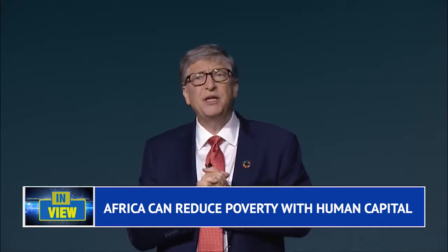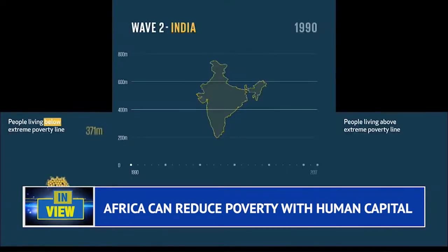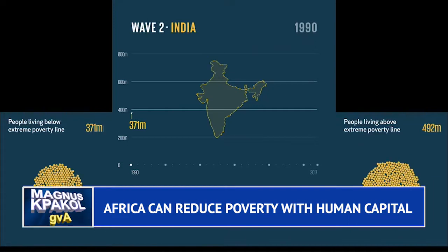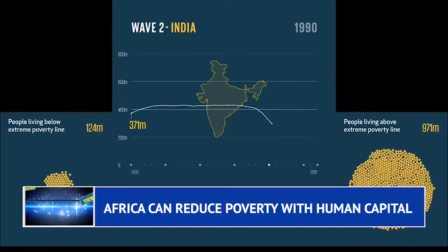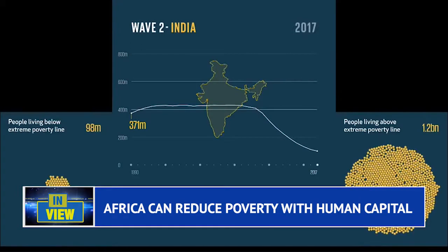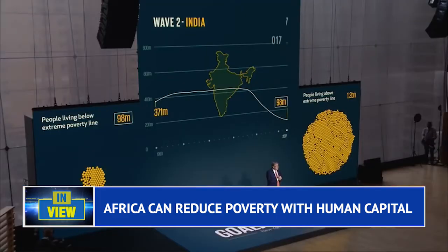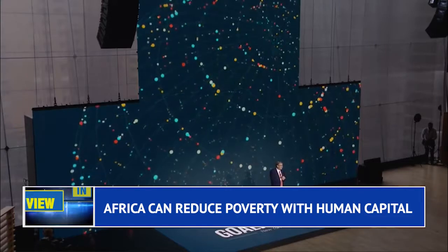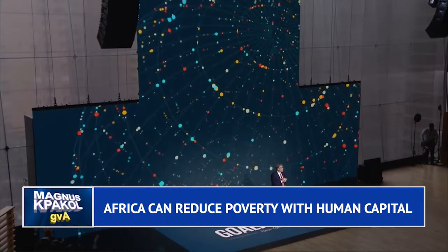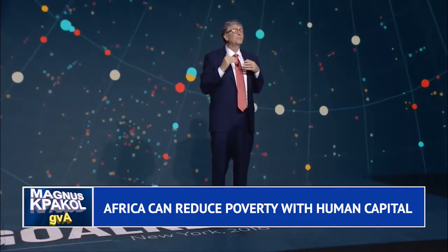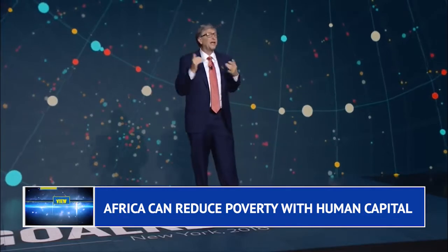The second wave came in India. Progress there started later, and it's been more gradual, but it's also an impressive trend. You went from 400 million people in extreme poverty in 2005 to just under 100 million today. And over the next several decades, that number's going to drop quite a bit. So the question we face is: can we create a third great wave of poverty reduction in the rest of the world that will bring extreme poverty near to eradication?